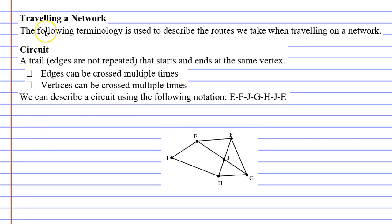Now we're going to look at what's called a circuit. A circuit is basically the same as a trail, meaning that edges cannot be crossed multiple times but vertices can be crossed multiple times. What makes a circuit different is that it has to start and end at the same vertex. When we describe the circuit below you will notice that we start at vertex E and we end at vertex E.